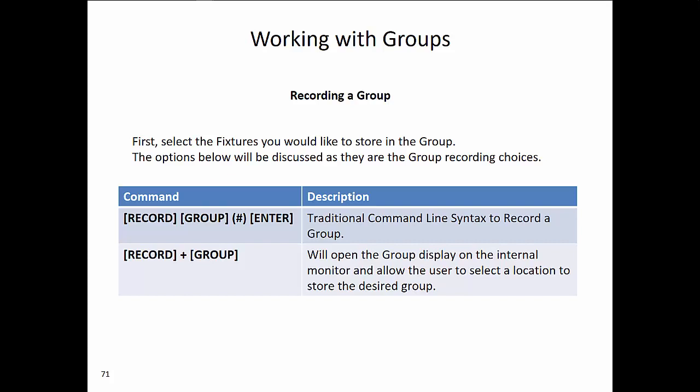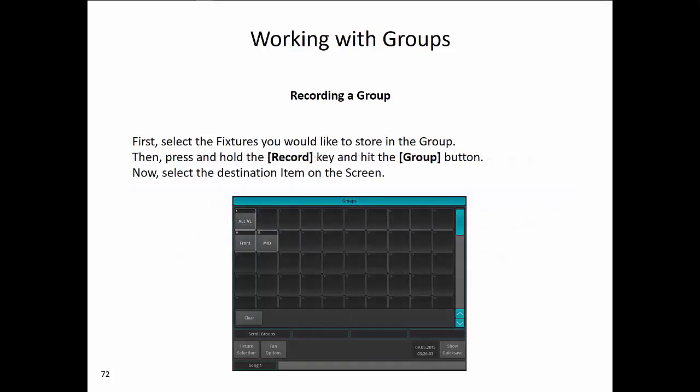For a graphical solution, you can press Record and then the Group key, which will open the group display on the internal monitor and allow the user to select a location to store the desired group by pressing on an open group button. From there, you can type in a name or take the default name, which will reference the information from patch.